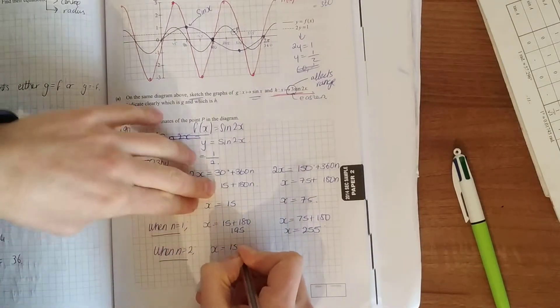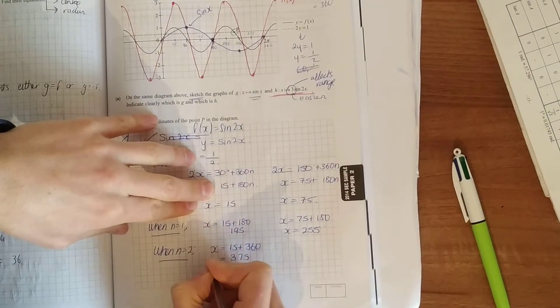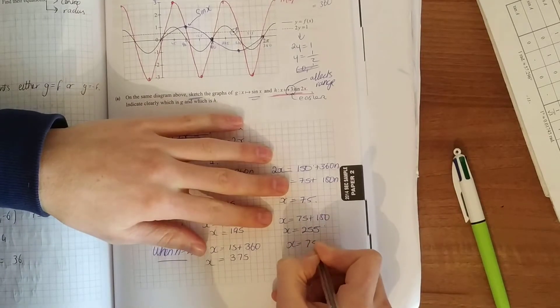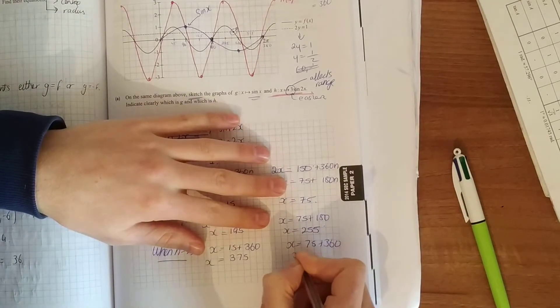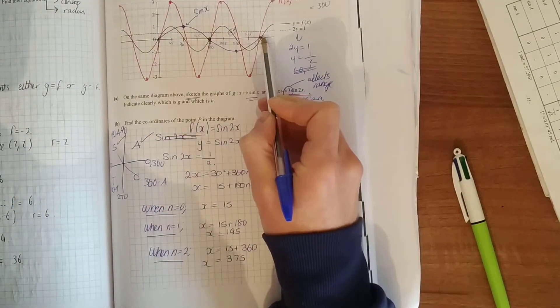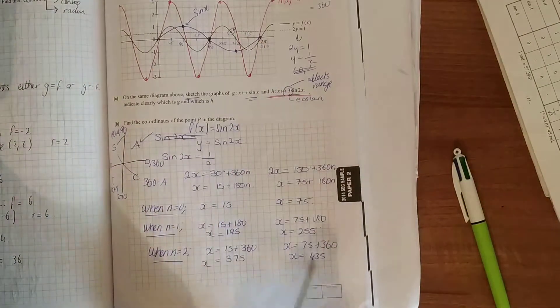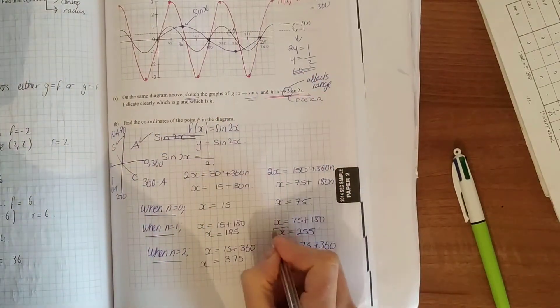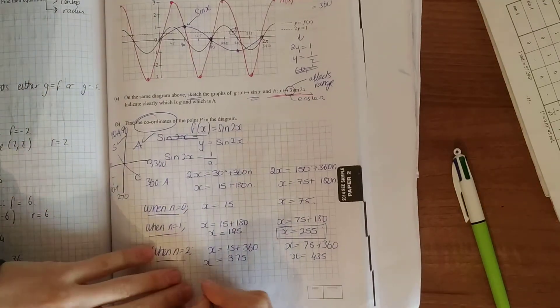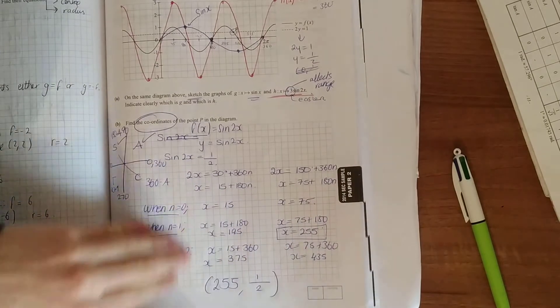x equals 15 plus 360, which is 375, and x equals 75 plus 360, which is 435. You can see there it's far too much, above your 360. So this is our answer here. Find the coordinates. Coordinates are made up of an x and a y, so x is 255 and the value of y is a half.